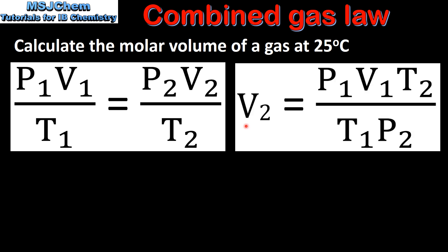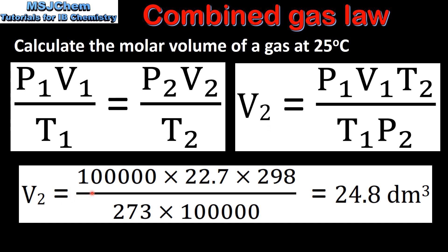To solve this I'll rearrange the combined gas law to solve for V2, which is the final volume of the gas. Next I'll input the values: our initial pressure is 100,000 Pascals, the molar volume of a gas at STP is 22.7 decimetres cubed, and the new temperature of the gas in Kelvin is 298 K. We then divide by the temperature of the gas at STP, which is 273 Kelvin, multiplied by our final pressure, which we are assuming stays the same, to give us a volume of 24.8 decimetres cubed.